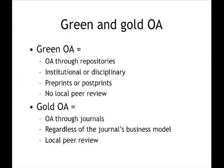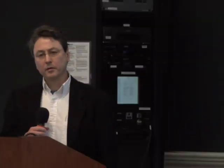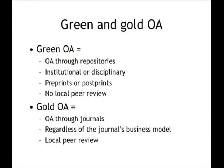For me, green open access is open access through a repository. Repositories can hold peer-reviewed literature, even though they don't perform peer review themselves. When I say no local peer review, I just mean they don't perform it themselves — they don't exclude peer-reviewed literature, and a good open access policy will encourage the deposit of peer-reviewed articles. Gold open access is open access through a journal, regardless of the journal's business model. Some journal business models require payments from authors, but others don't — if it's coming through a peer-reviewed journal, it's gold open access.